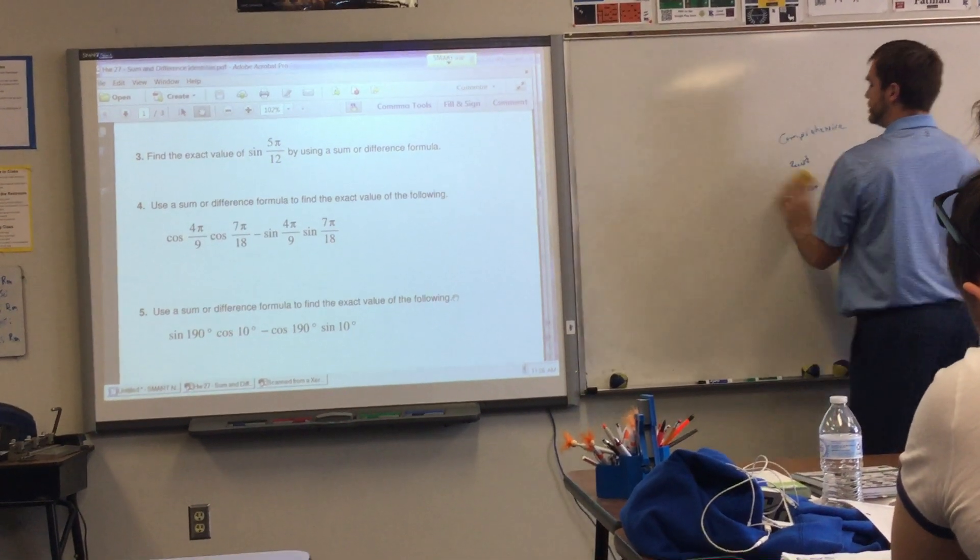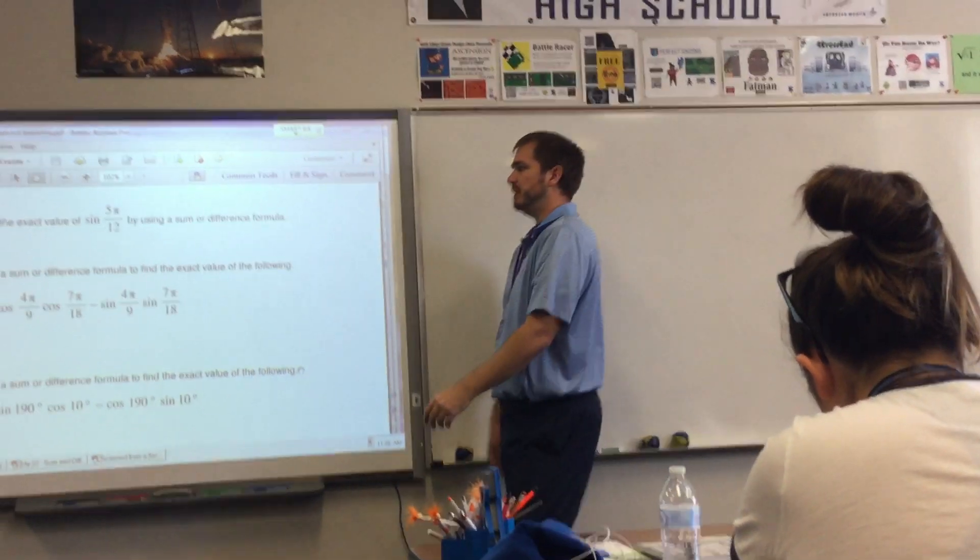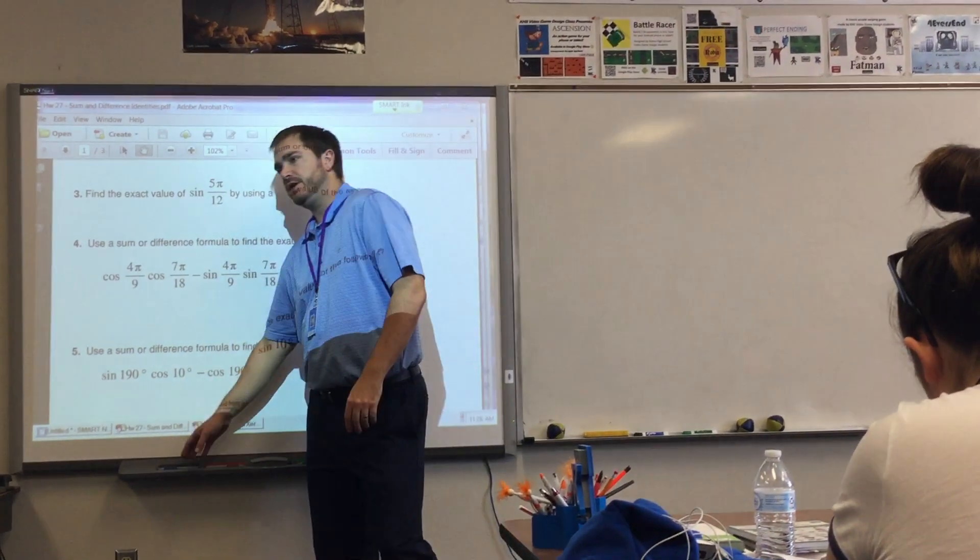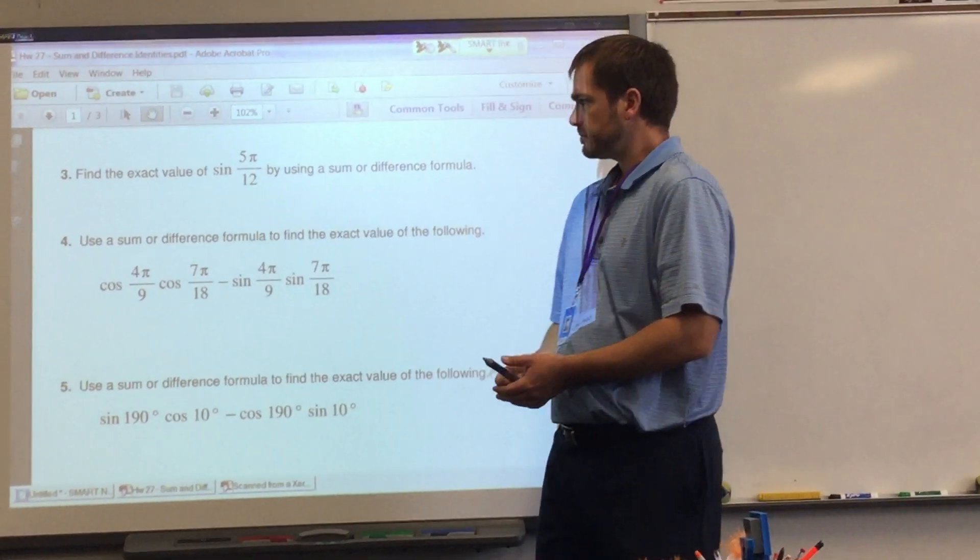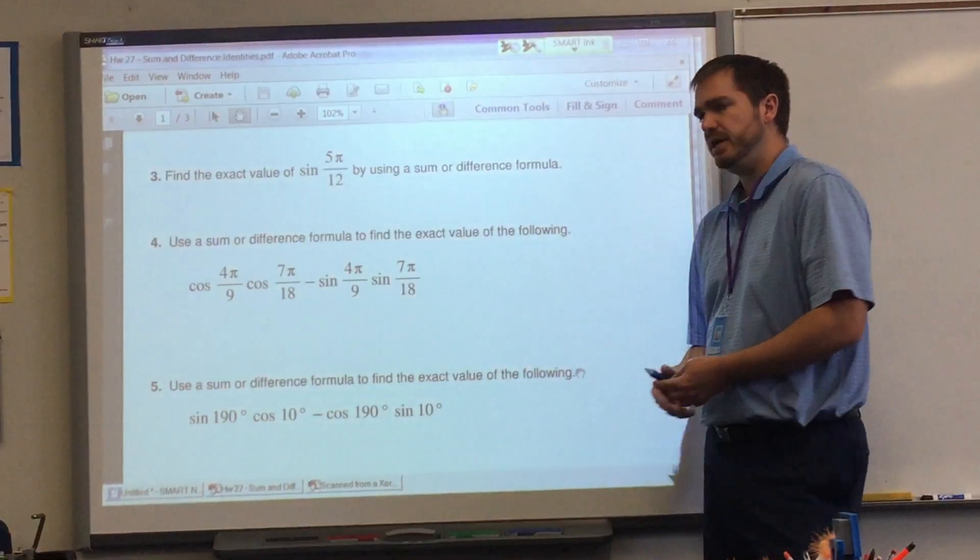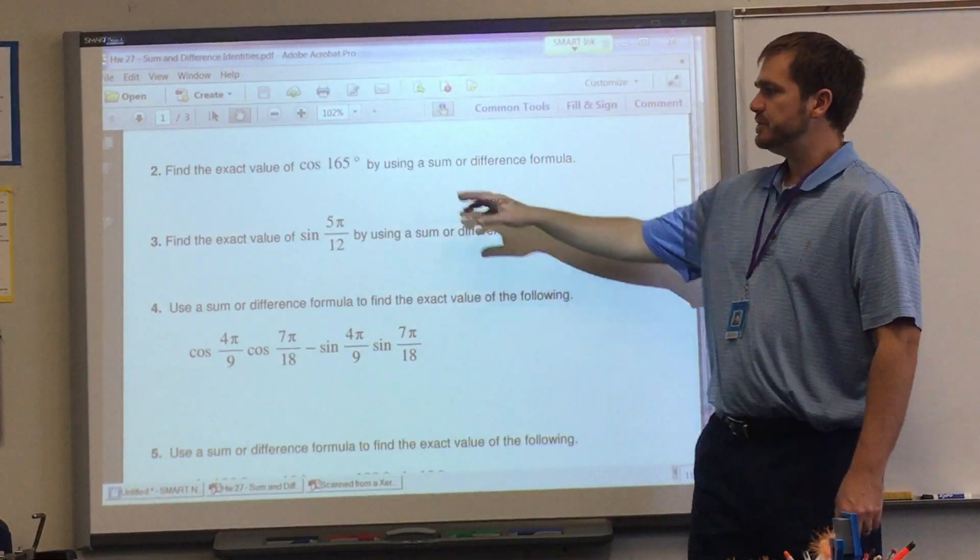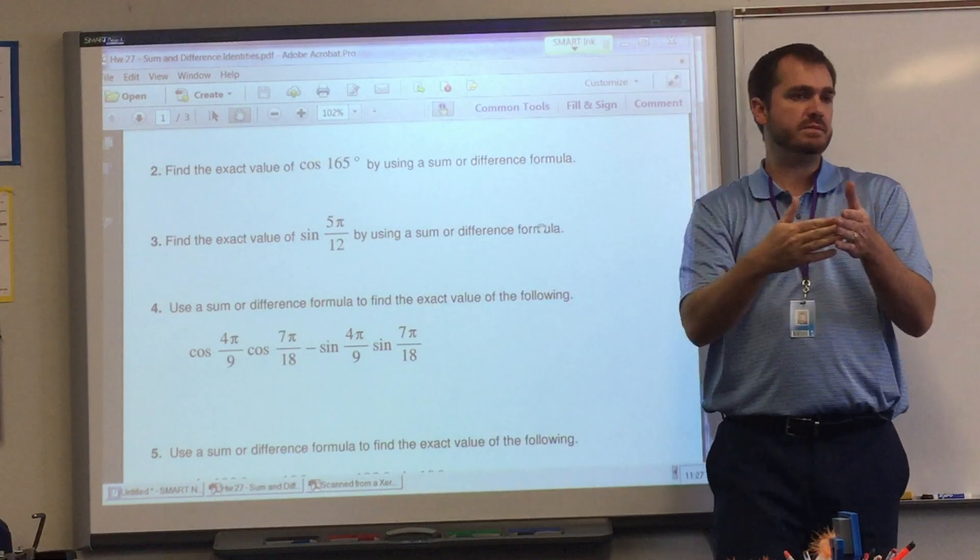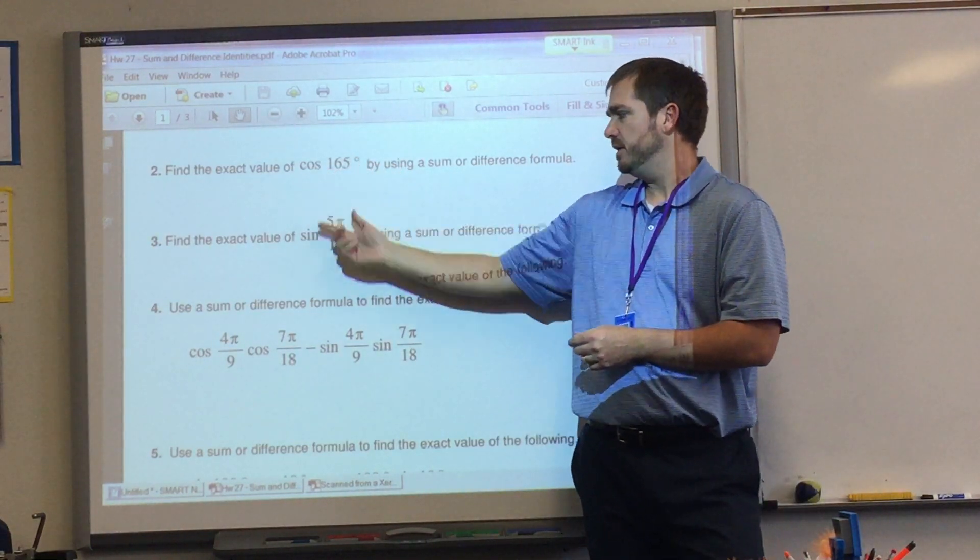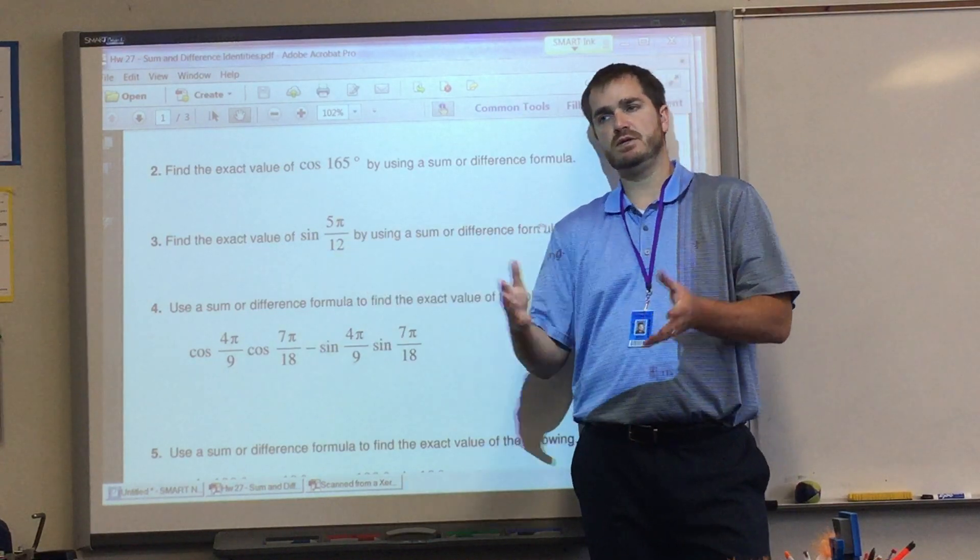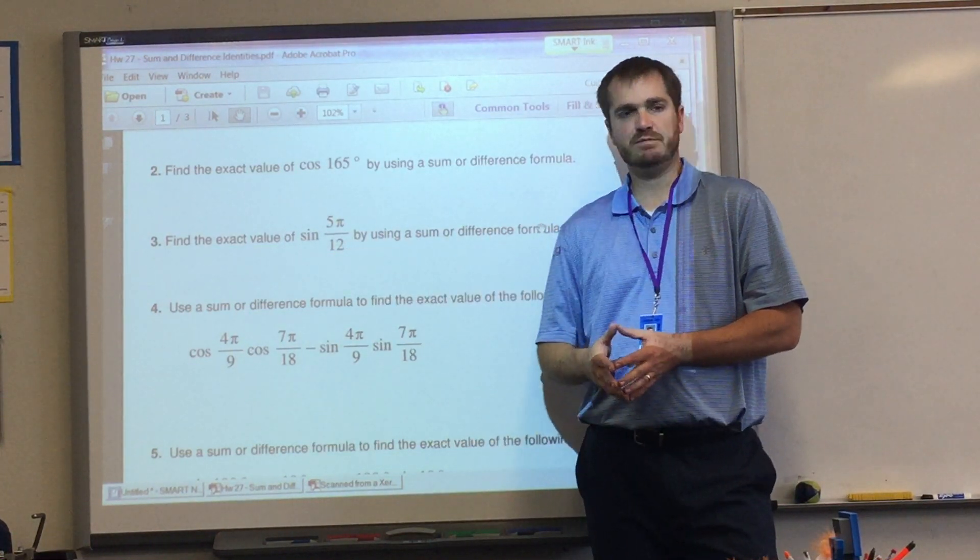Sine of 5π over 12 by using a sum or difference formula. We cannot just type in sine of 5π over 12. It's going to be one of those weird angles, and they want the exact answer. So if you remember what we did yesterday with number 2, we found two angles on the unit circle that when you add them together or subtract them, you get 165. Now we have to find two angles on the unit circle that when you add or subtract them, you're going to get 5π over 12.